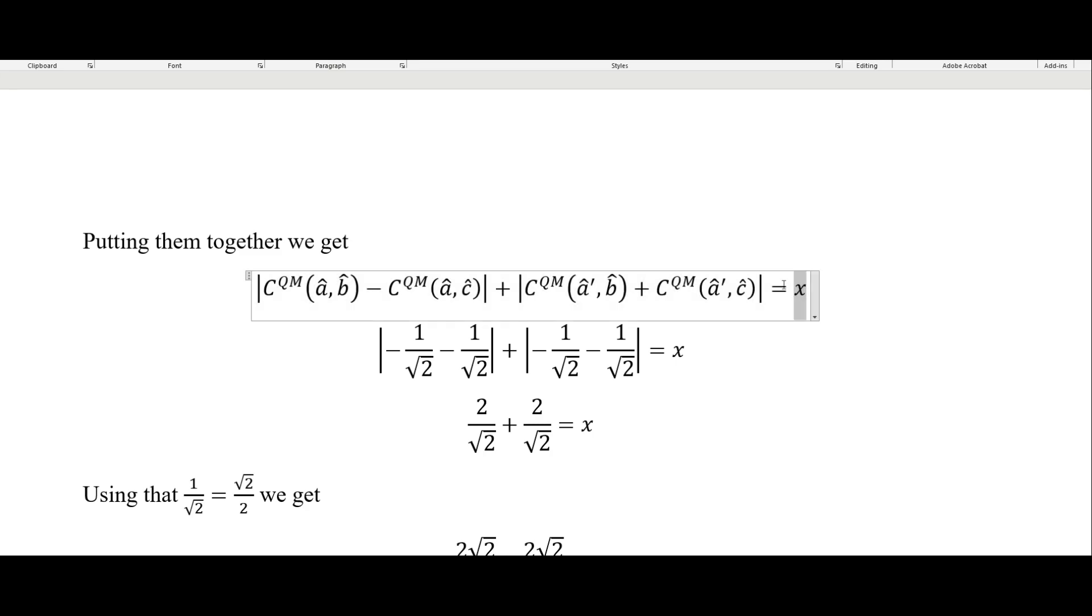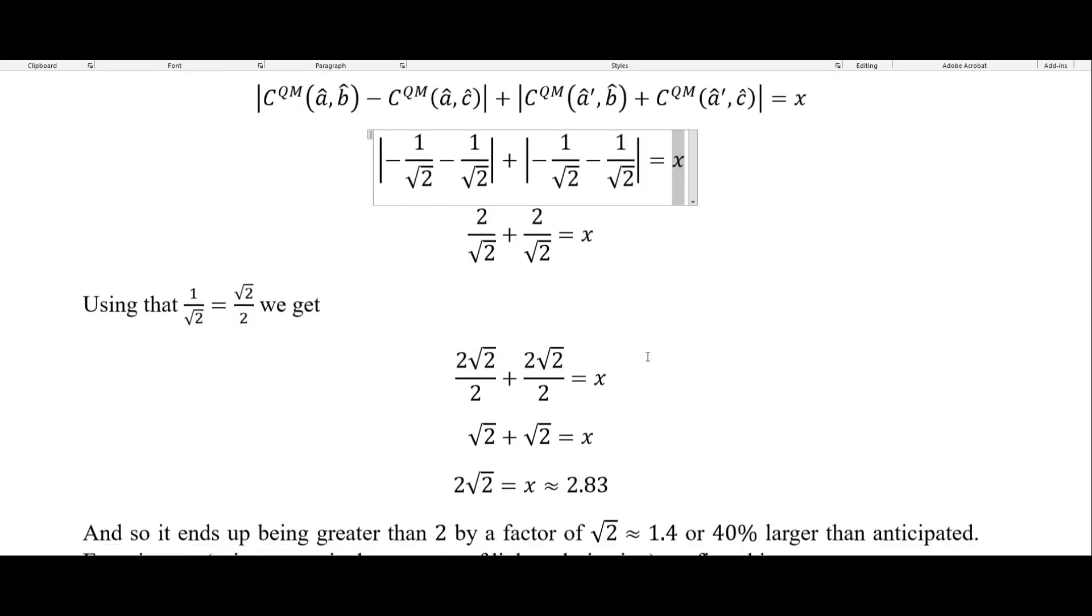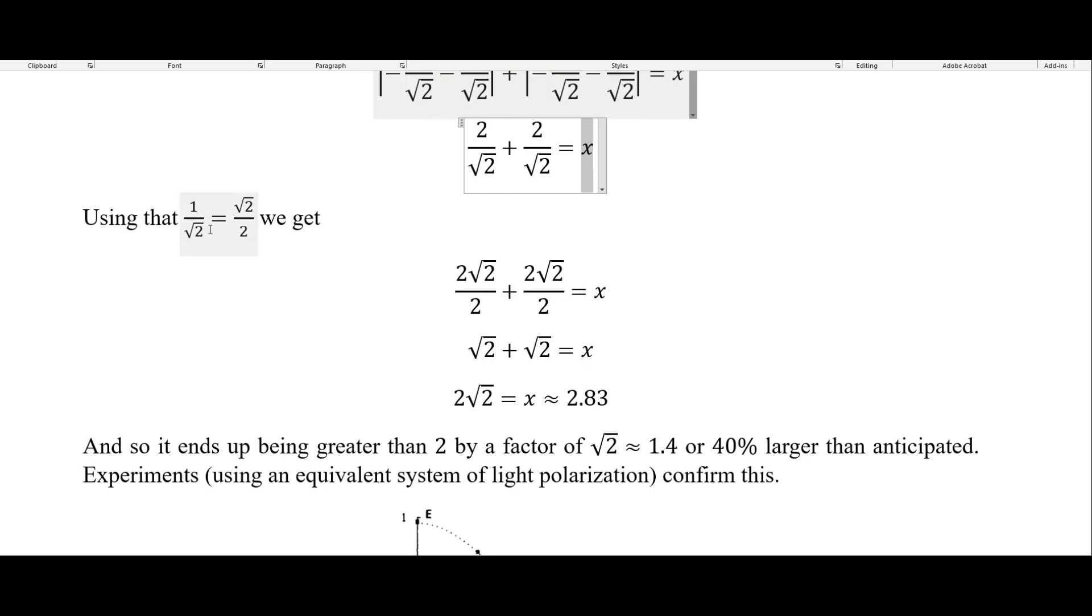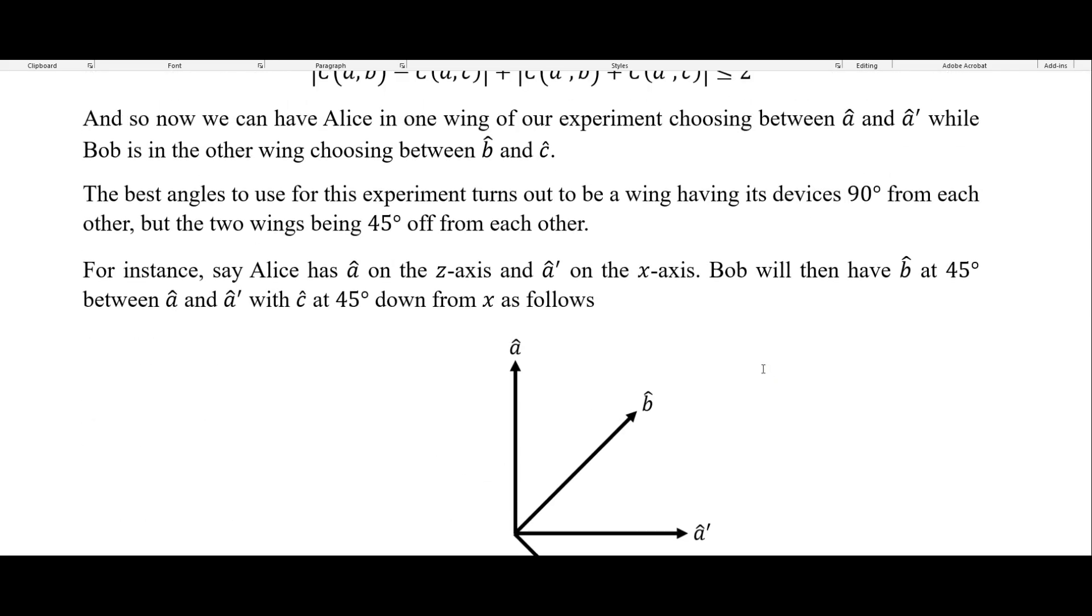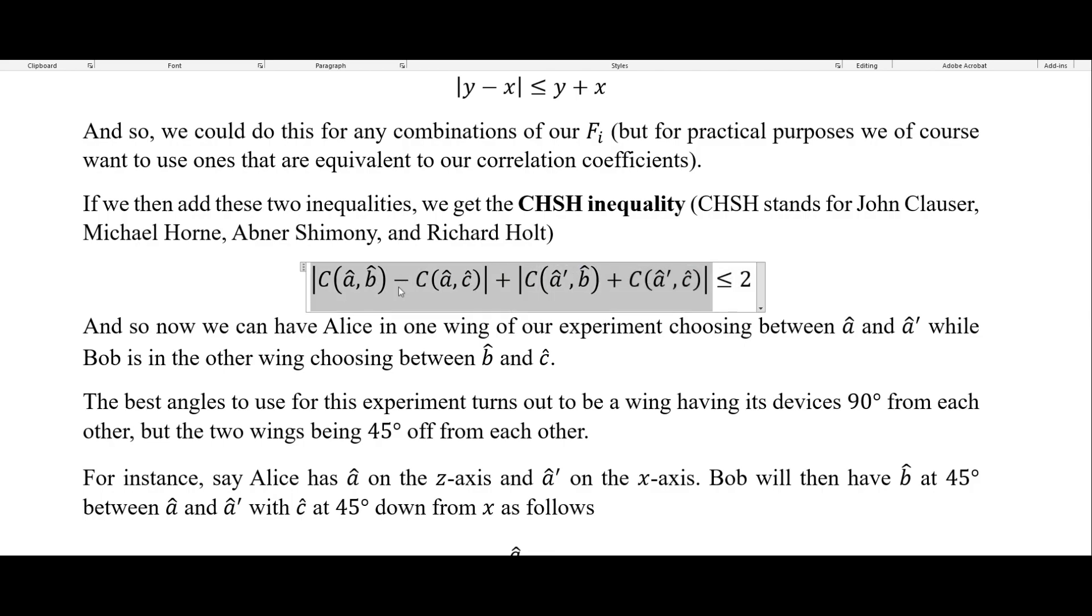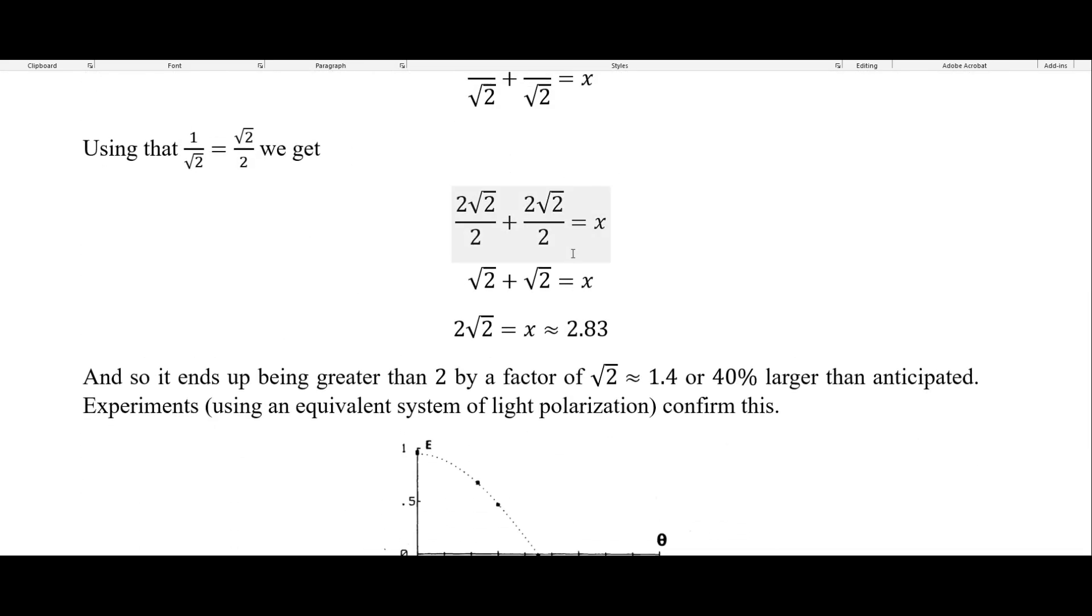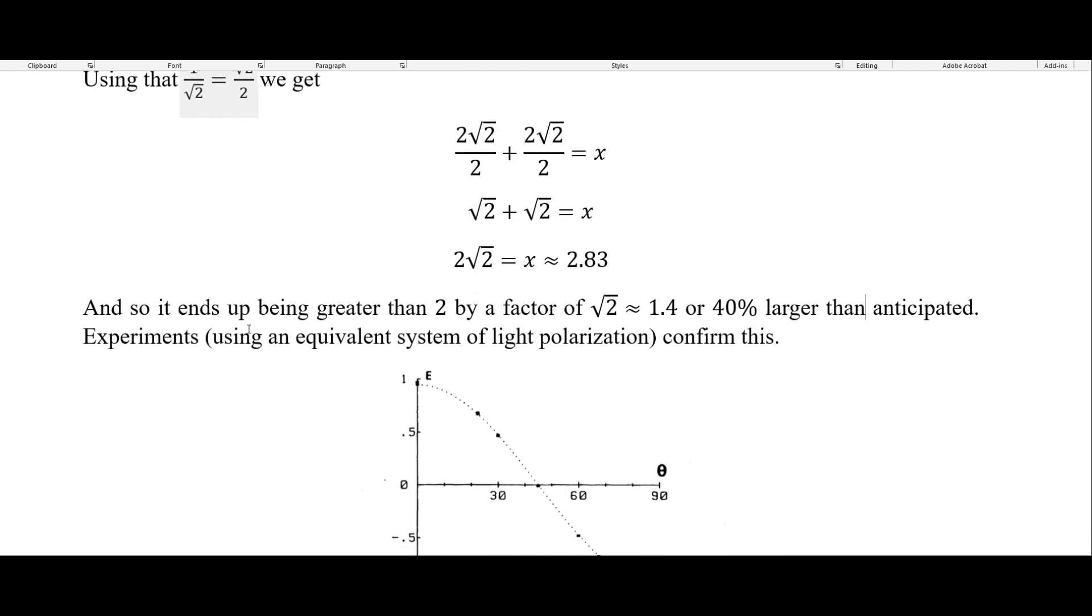And then putting them together into this. And so what we want to do is find what this actually equals when we put these into this equation right here. So we'll be solving for X. We put each of those in here. And so we have that equal to X. We get this. We use that one over the square root of two is equal to the square root of two over two. And so we end up with this right here. So that's two times the square root of two equals X. And so that equals about 2.83. Remember, we said for local hidden variables, we need this to be less than or equal to two. But what we're finding when we put in our quantum mechanical predictions is that this would actually be about 2.83. So about 40% larger than the anticipated value if we have local hidden variables.